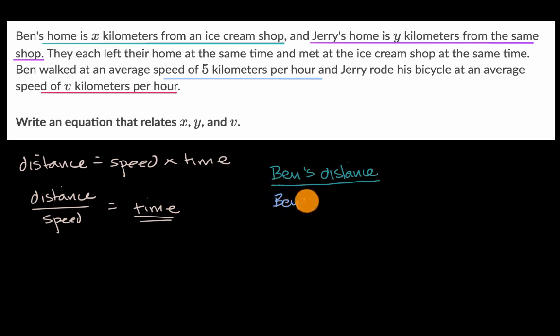And let me write it in this color. Ben's speed should be equal to Jerry's distance divided by Jerry's speed.